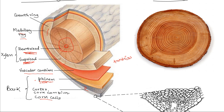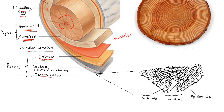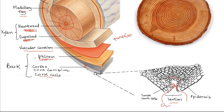At some points on the bark, the cork cells may not be suberized but instead form a loose mass called lenticels. Within the lenticels, the loose mass of cork cells allows gases to exchange freely between the inside and outside, so oxygen diffuses into the stem while carbon dioxide diffuses out.